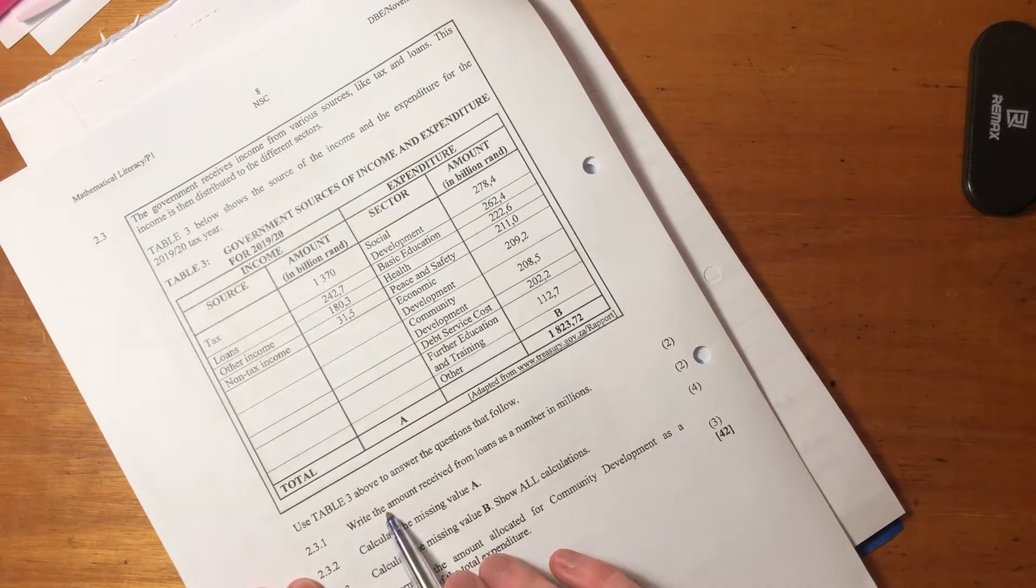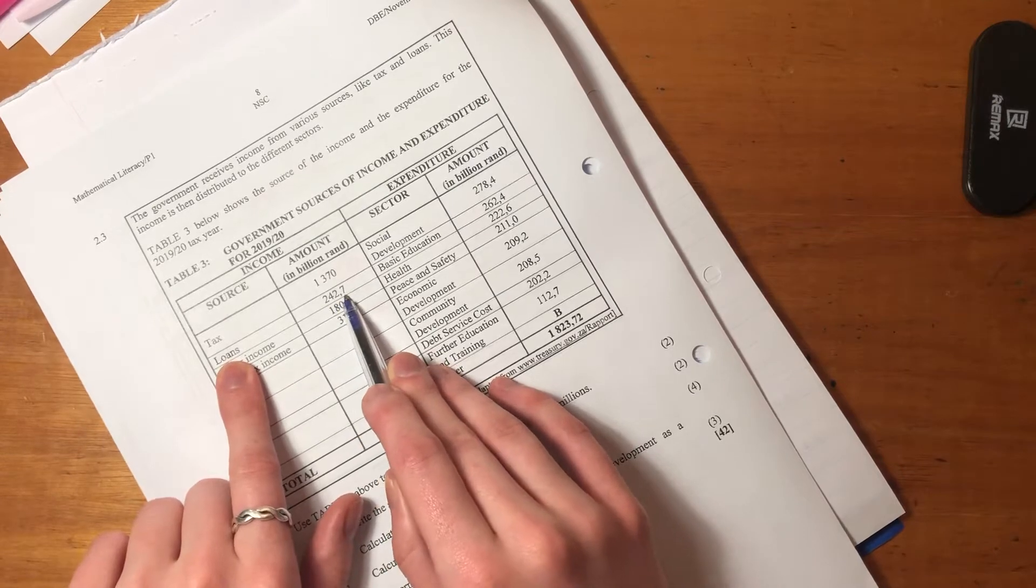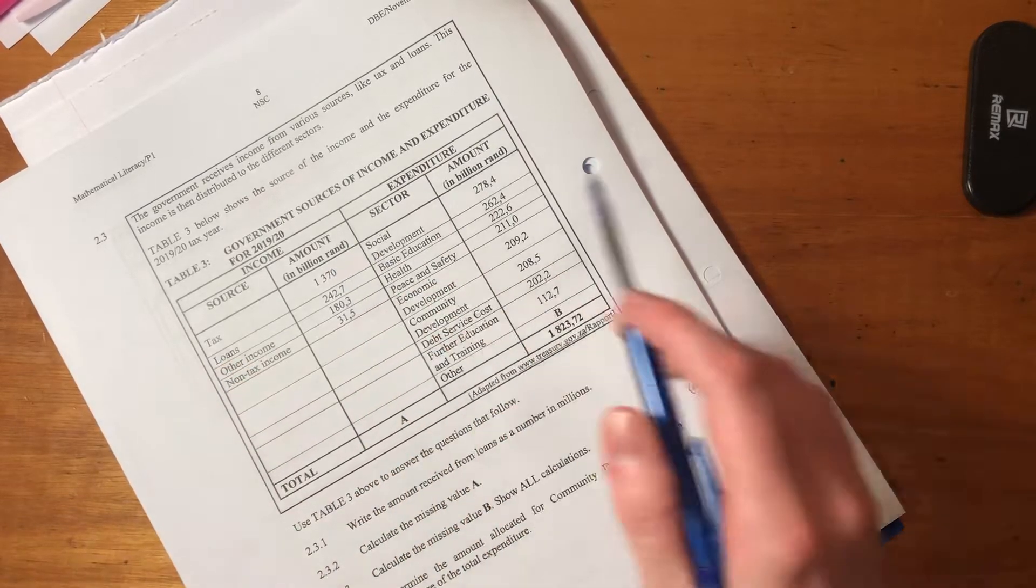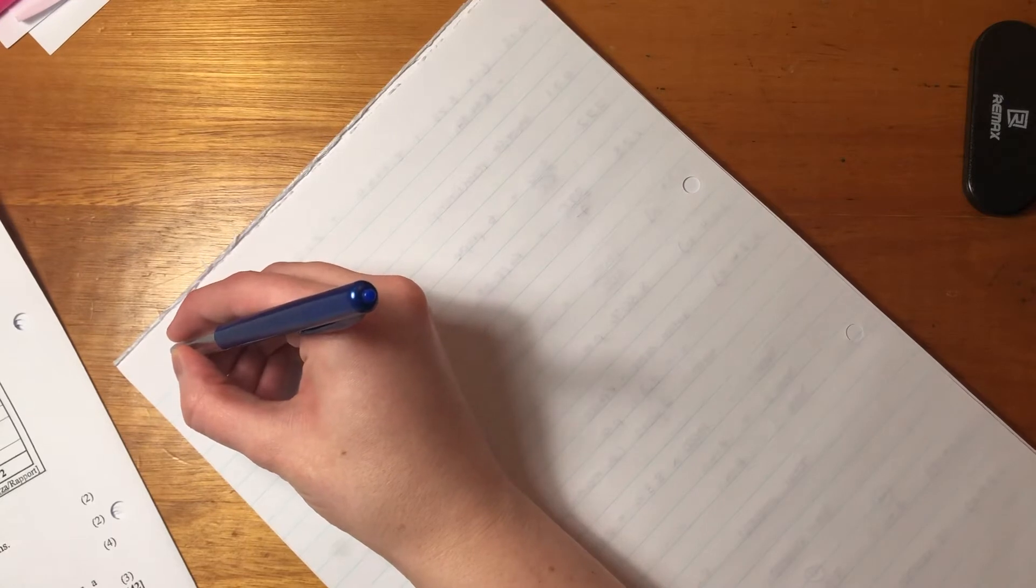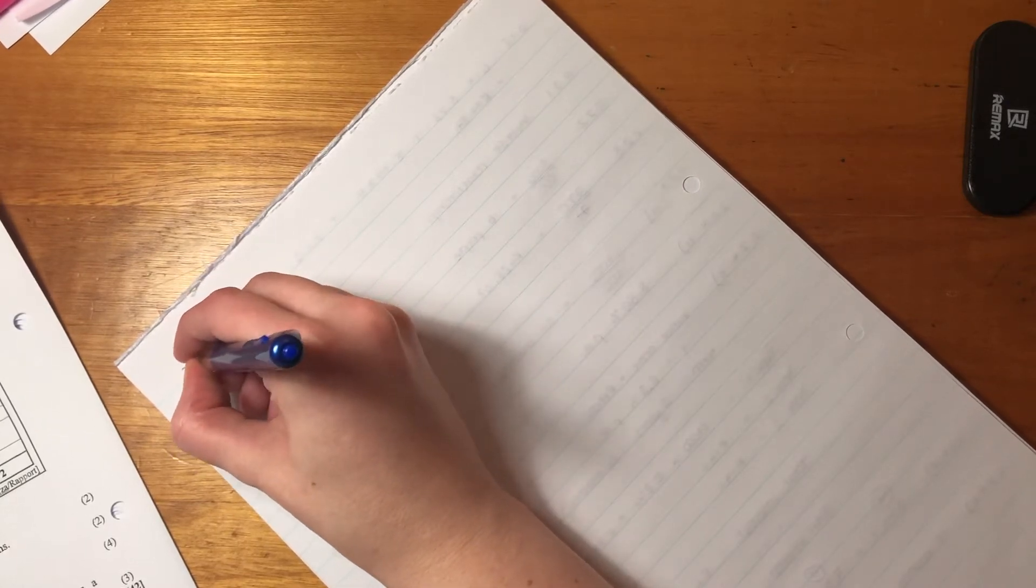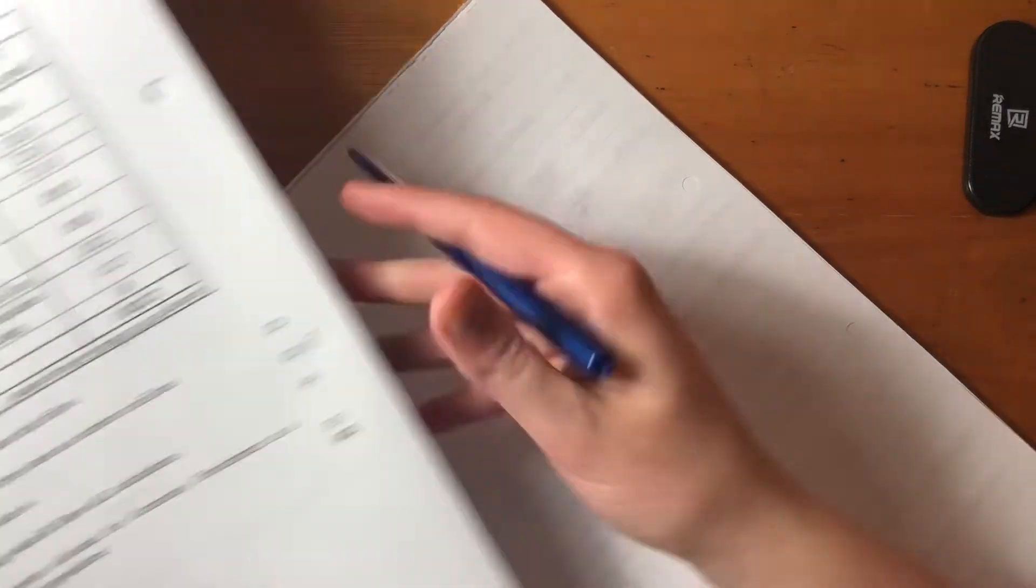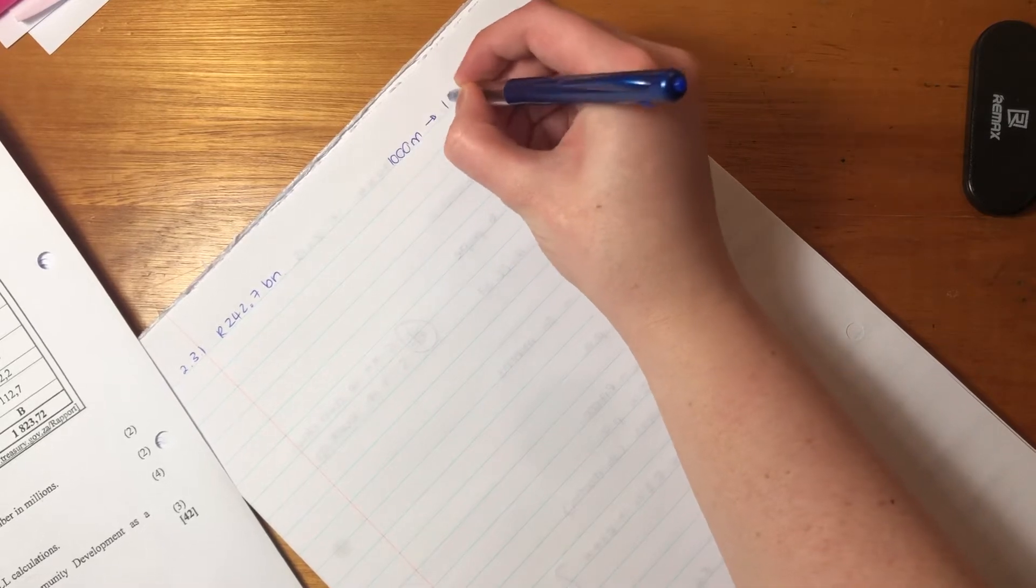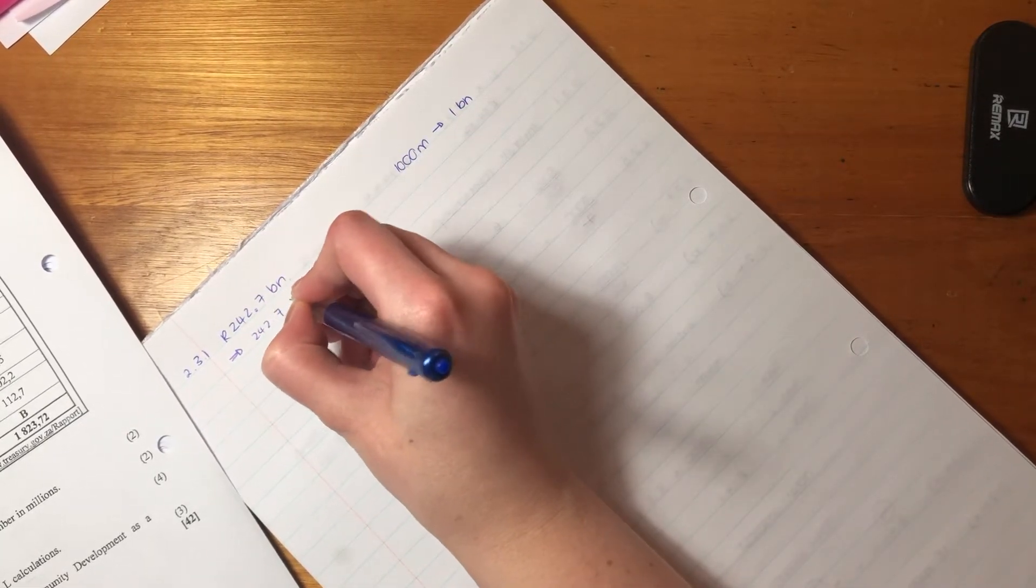Let's see what we can do with the questions. It says use table three. It says write the amount received from loans as a number in millions. We see the loans are over here, and it's 242.7 in billion Rand. Now this is a tricky one. This is in billions. So we know that there are 1000 millions in 1 billion. That's important. So what we're going to do to put this into millions is we're going to say 242.7 times by 1000.